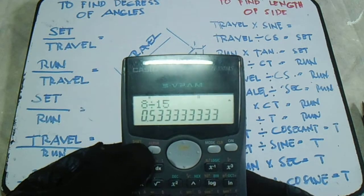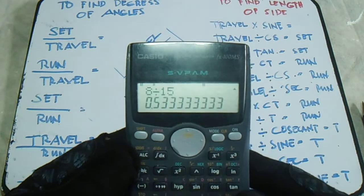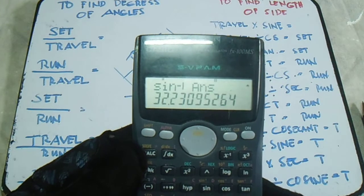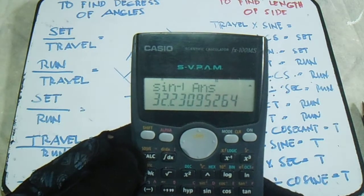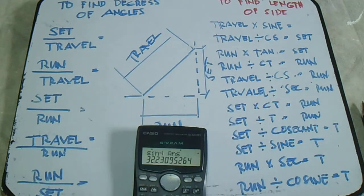To find the degrees, shift and then sine inverse. So this is our degree, 32 degrees. So this is an example, very easy.